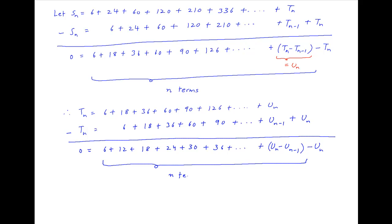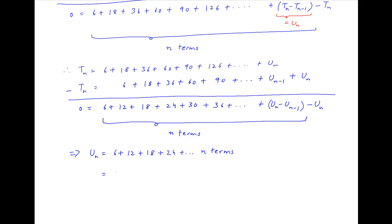This can be rewritten as Un is equal to 6 plus 12 plus 18 plus 24 plus and so on till n terms. Notice that this is an arithmetic series with the first term equal to 6 and the common difference equal to 6. Therefore Un is equal to n upon 2 times (2 times 6 plus n minus 1 times 6), which equals n upon 2 times (6n plus 6), which is equal to 3n times n plus 1.